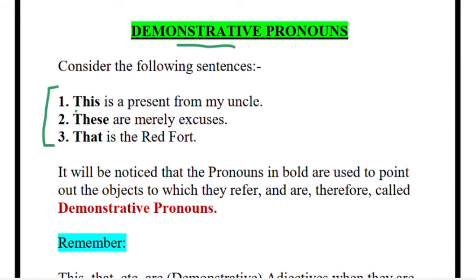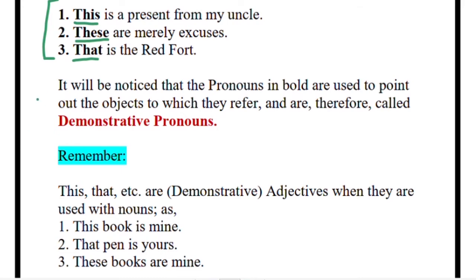'This one is mine, that one is hers, this one is my bag, that one is your bag, these are my pens' — those are demonstrative pronouns. The words used in case of demonstrative pronouns are: 'this' and 'these' for singular and plural nearby things, and 'that' and 'those' for things further away. The pronouns in bold are used to point out the objects. If you want to write down the definition: to point out certain things you use these words — and these are demonstrative pronouns.